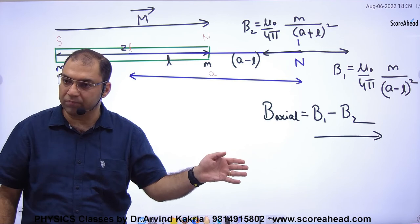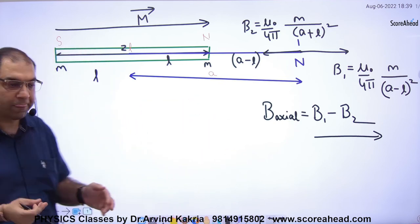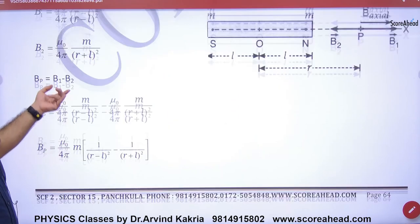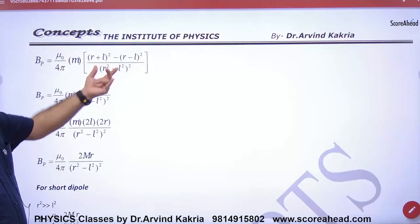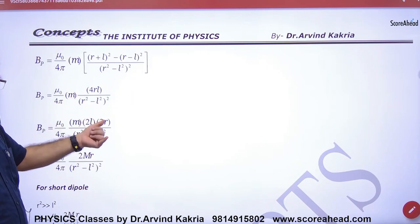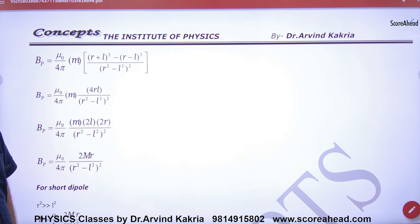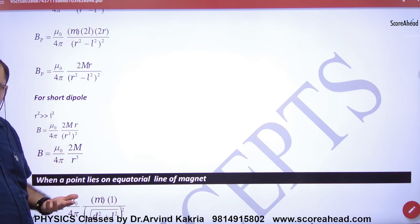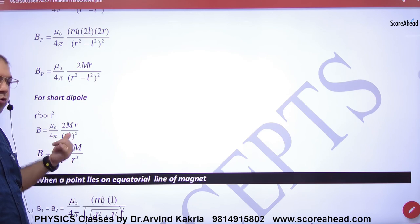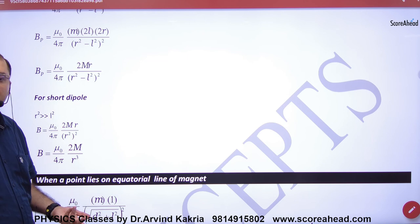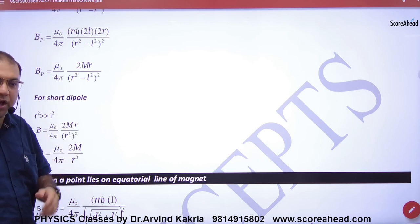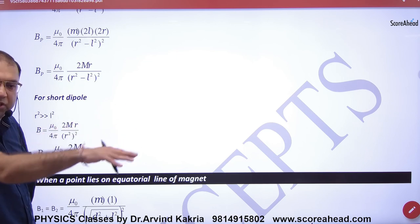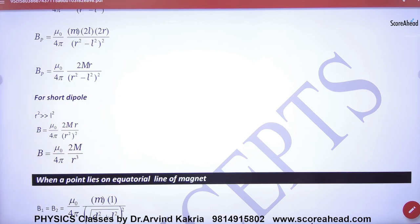Check, please, in this magnet B1, B2, B1, B2 minus, LCM open, 4 pi 2m into 2l. Capital M axial formula, and because this short dipole, r, r cube, and 2m. And to tell me, this assignment we have written p, m and m. And chapter check, same to same to same. Same to online.